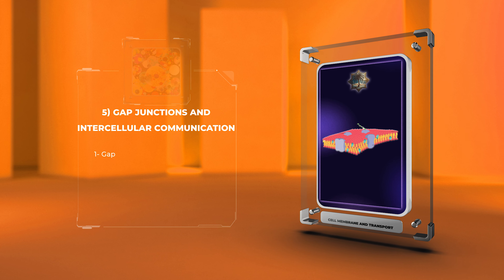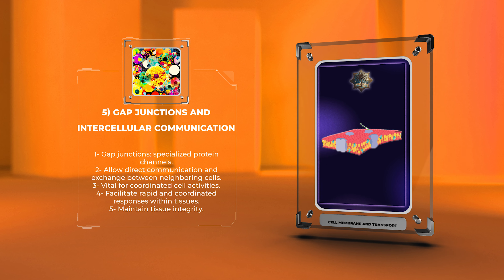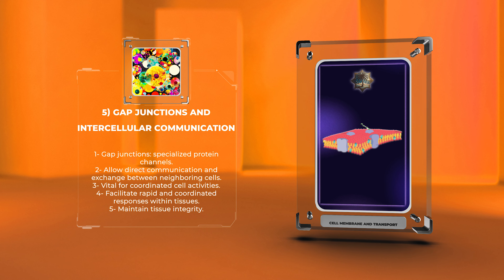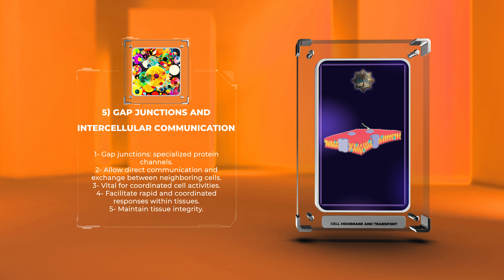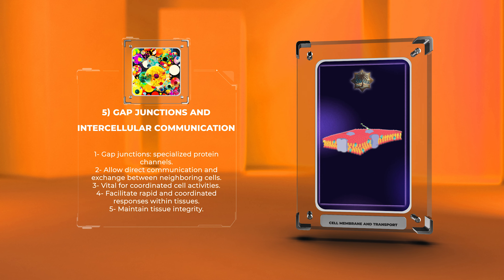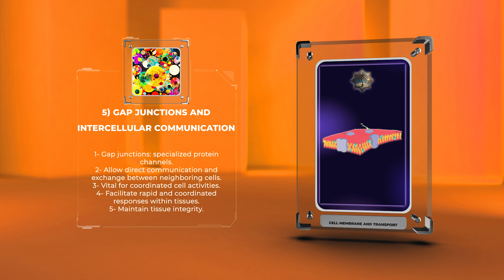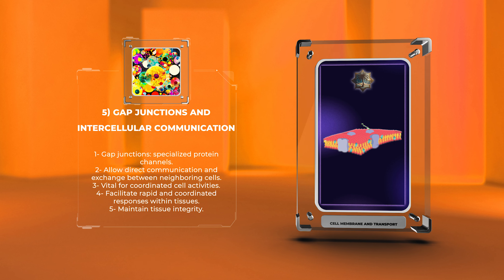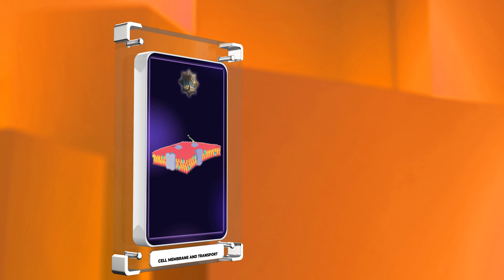Gap junctions are specialized protein channels that allow direct communication and exchange of small molecules, ions, and electrical signals between neighboring cells. These channels are vital for coordinating cell activities such as synchronized contractions in the heart or electrical signaling in the nervous system. Gap junctions ensure rapid and coordinated responses within tissues, facilitating cellular communication and maintaining tissue integrity.